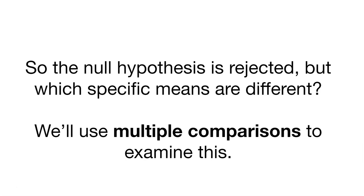This concludes the analysis of variance. We concluded that the null hypothesis is rejected, but you should be left wondering more — we found out that at least one mean is different, but we don't know which ones. This is where the concept of multiple comparisons comes in. Multiple comparisons are done after analysis of variance and will allow us to compare specific means — for example, is the iron level at 100 feet significantly different from the iron level at 0 feet? That's what multiple comparisons will allow us to do.